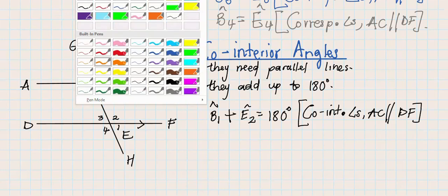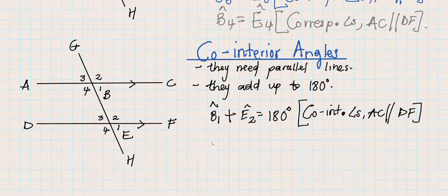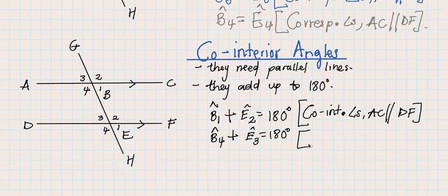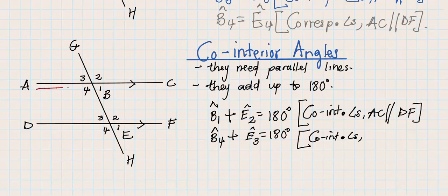Let's write that down. Angle B4 plus angle E3 must give us 180 degrees. Remember, there's no answer without a reason — these are co-interior angles. The F-formation moved along this line, so we say AB is parallel to the next line of the formation, which is called DF.